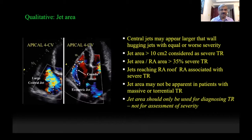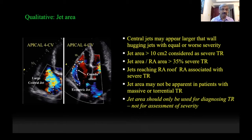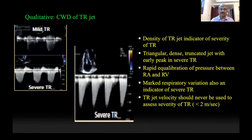Regarding jet area: the first point is that jet area should only be used for diagnosing tricuspid regurgitation, never for assessing severity, because it can be misleading — wall-hugging jets may be equal or worse than a central jet which creates a larger apparent jet area. In general, a jet area of more than 10 cm² is considered severe TR, and a ratio of jet area to RA area of more than 35% is considered significant. A jet that reaches the roof of the right atrium is generally considered significant TR. On color Doppler, as the severity of TR increases, the density of the continuous wave Doppler signal increases. In late severe TR, you may get a triangular, dense, truncated jet.